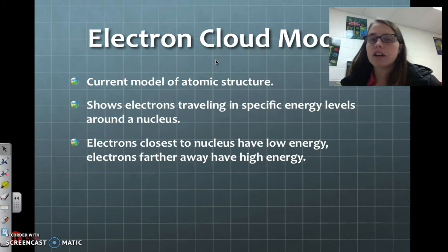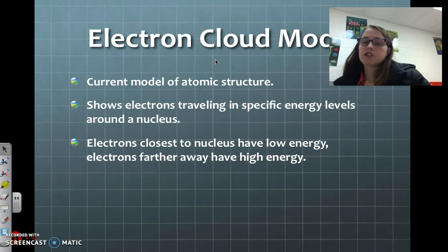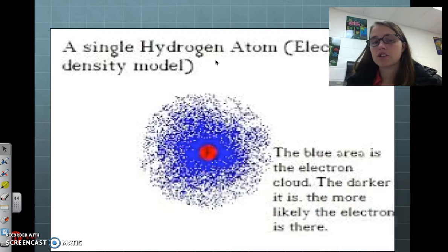It shows that electrons travel in specific energy levels around the nucleus. Again, electrons closest to the nucleus have low energy, electrons furthest away have higher energy.